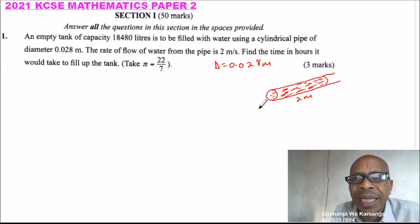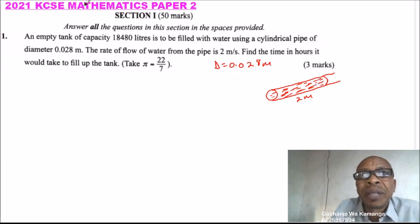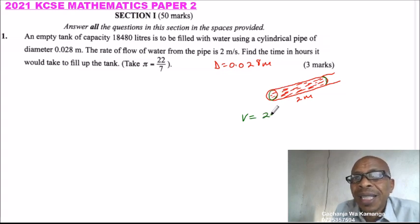So the amount entering into the tank in 1 second, we find the volume of this part here. To get the volume, volume equals base area. The base area is circular, so it's 22 over 7, then multiply by the radius. The radius is half of this, so it's 0.014, multiply by 0.014, and multiply by the height which is 2.